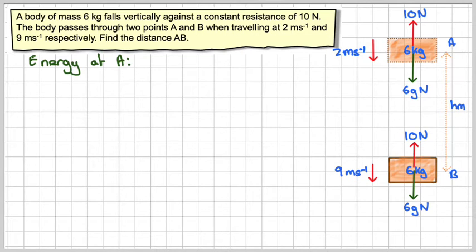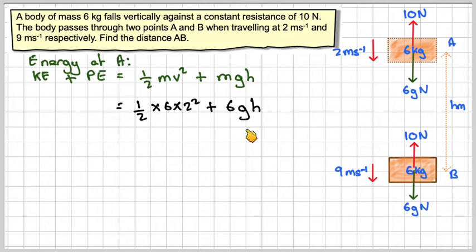So the energy at A—we're going to use energy, so there's going to be two types of energy at A: kinetic energy and potential energy. We'll take this as our reference point, so it will be half mv squared plus mgh. So the first case would be half times 6 times 2 squared plus 6gh, and h is what we've got to calculate, so that will give me 12 plus 6gh joules of energy.